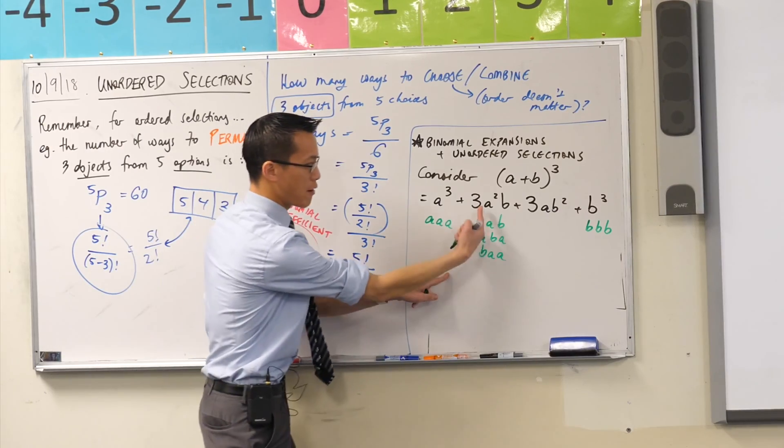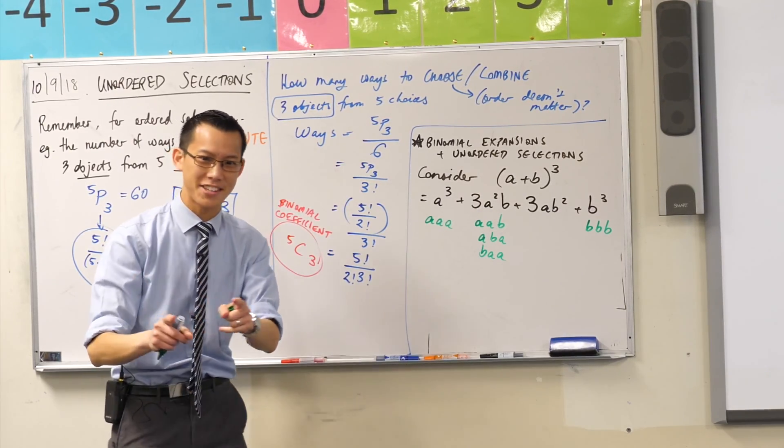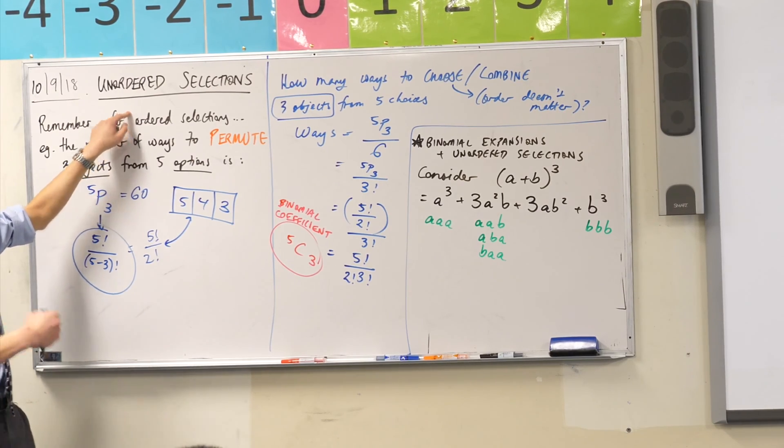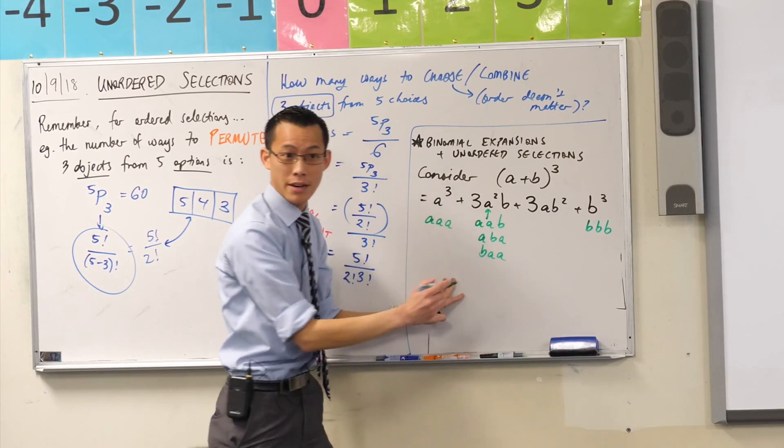But you see, we sort of compress these all into one thing because in multiplication, order does not matter. Do you remember that, right? We have a name for this. We say multiplication is commutative. You can just rearrange these guys to be whatever you want, and they're all the same thing.